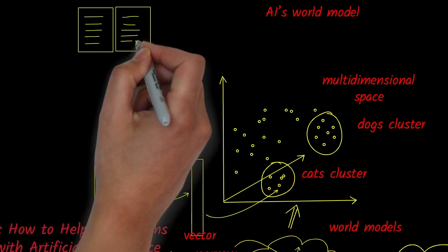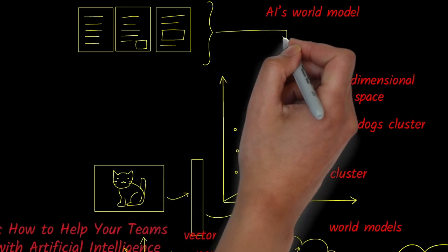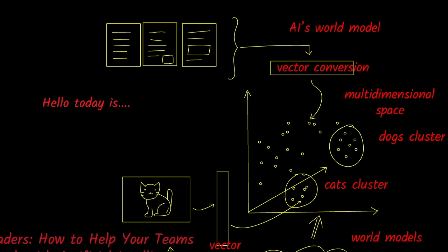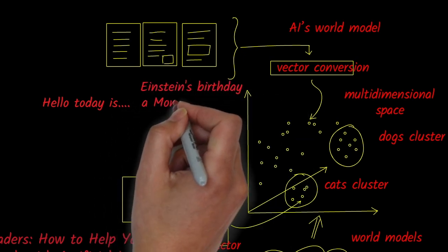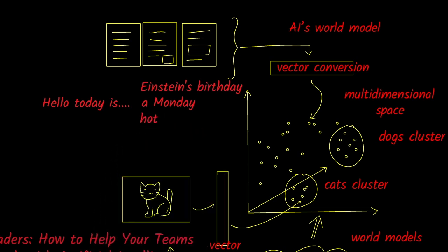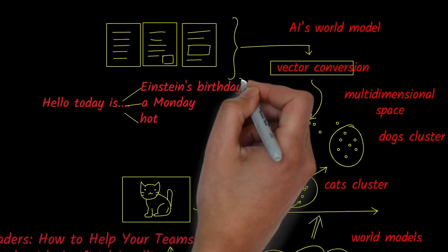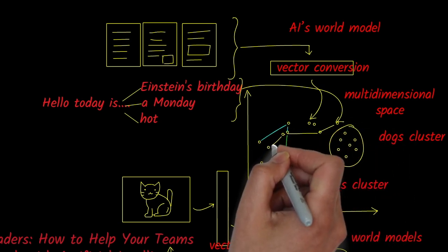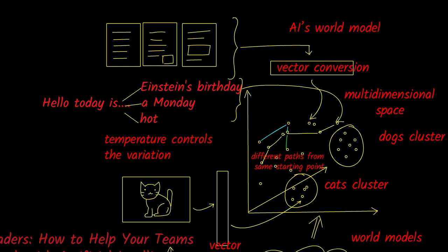Large language models like ChatGPT work similarly, but with words instead of images. Words are converted into vectors and stored in this or a different multidimensional space. Given a sequence of words like Hello, today is, the AI can predict the next word in the sentence by jumping to the closest vector. The key variable here is called temperature. If the temperature is very high, the AI generates more creative outputs and jumps to vectors in a more random way, but it also risks sounding random and hallucinating. If the temperature is low, the AI sticks to very predictable and rigid outputs. So striking the right balance is critical.